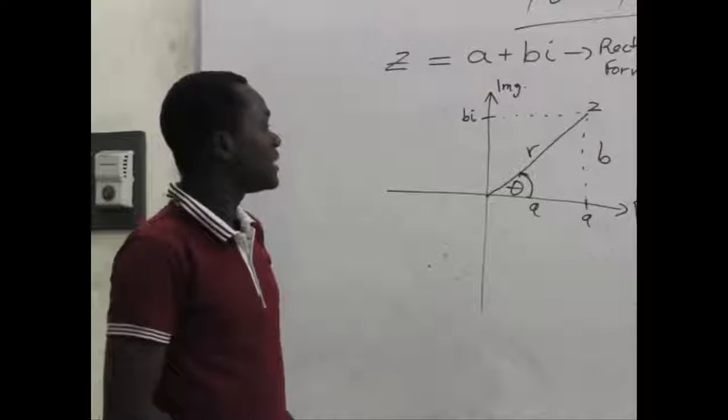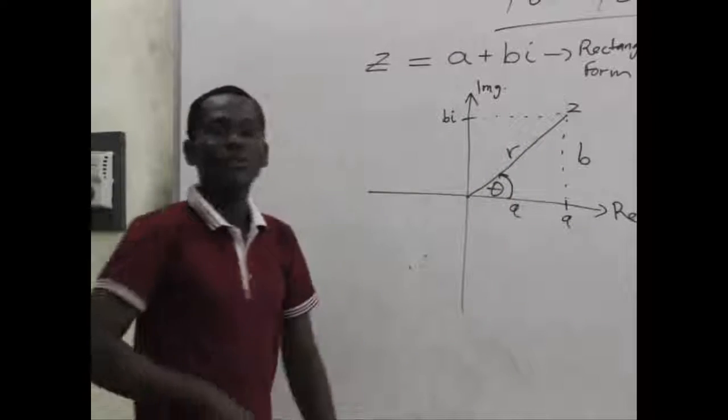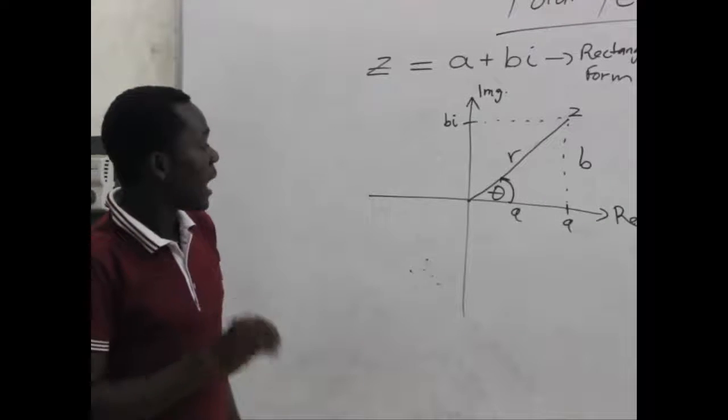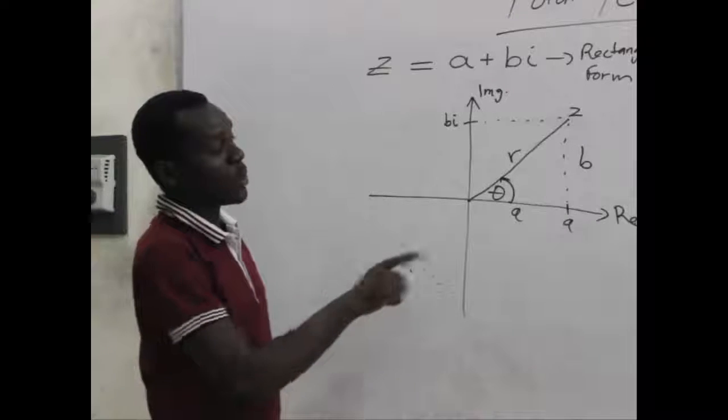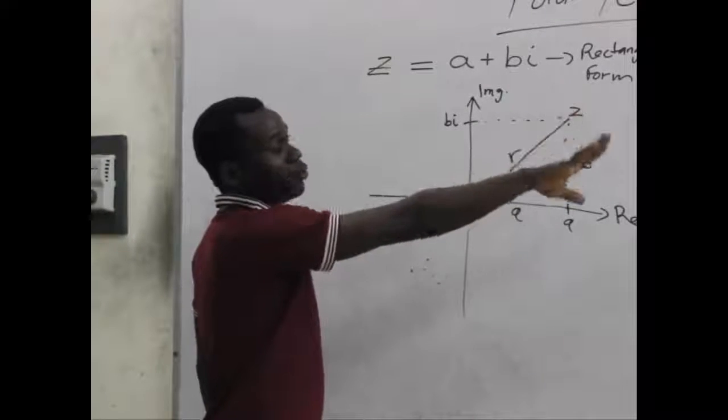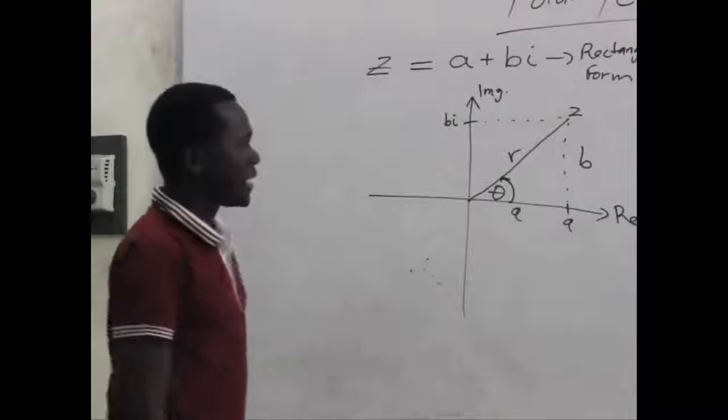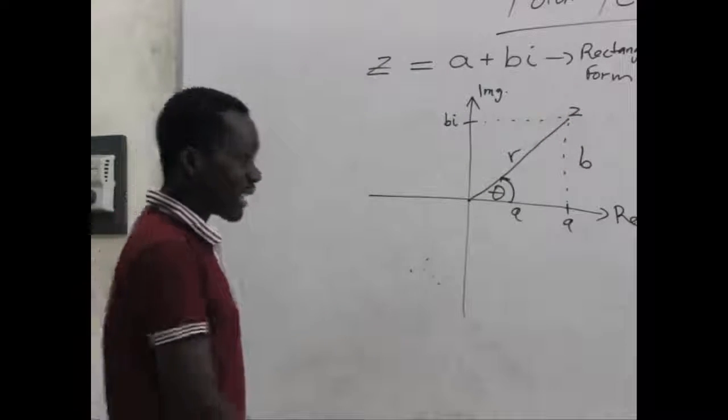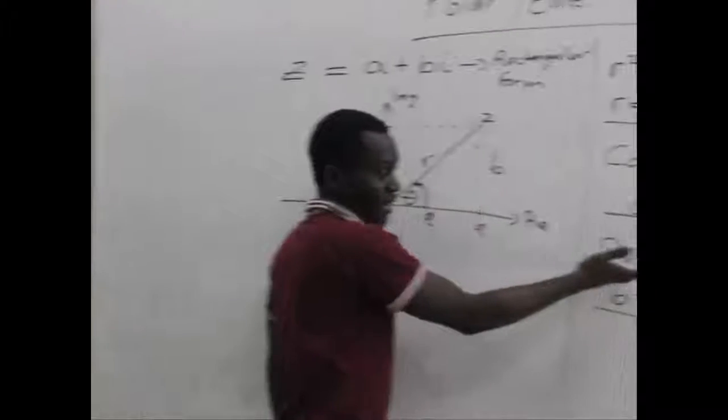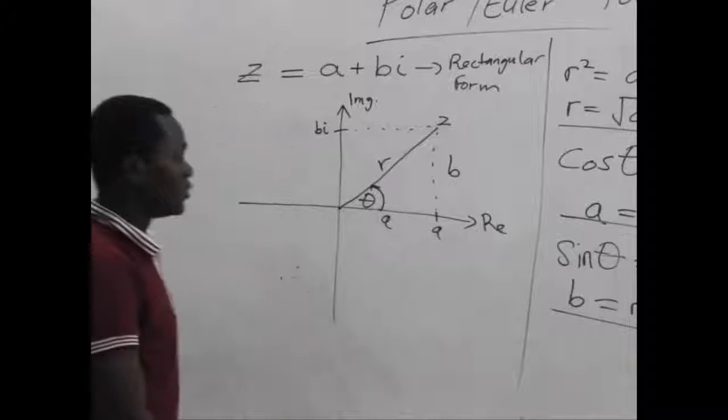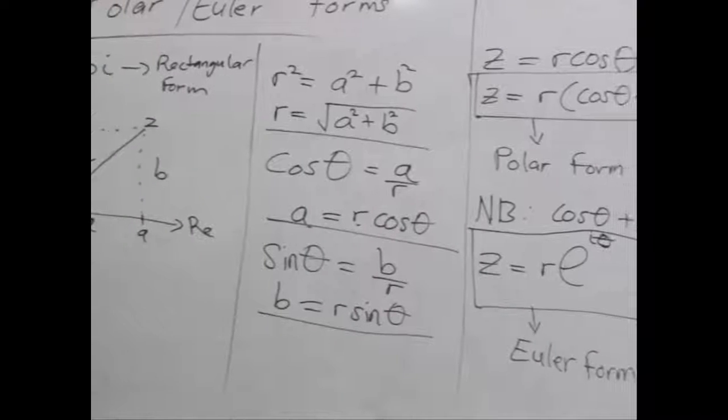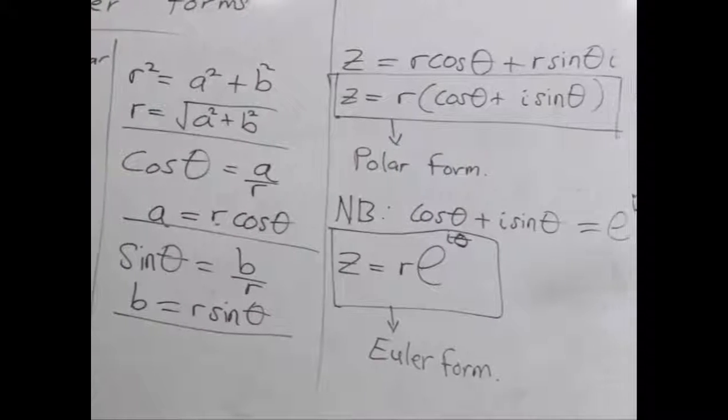In case we want to find theta, how do we find theta? Let's check how we are to find the theta. When we are computing these forms, we need to input the value of theta. Now, we have three basic trig ratios. And we've talked about the cosine and the sine in respect to theta. But we are left with the tangent, that's the tan. So that tan will help us in getting our value for theta.